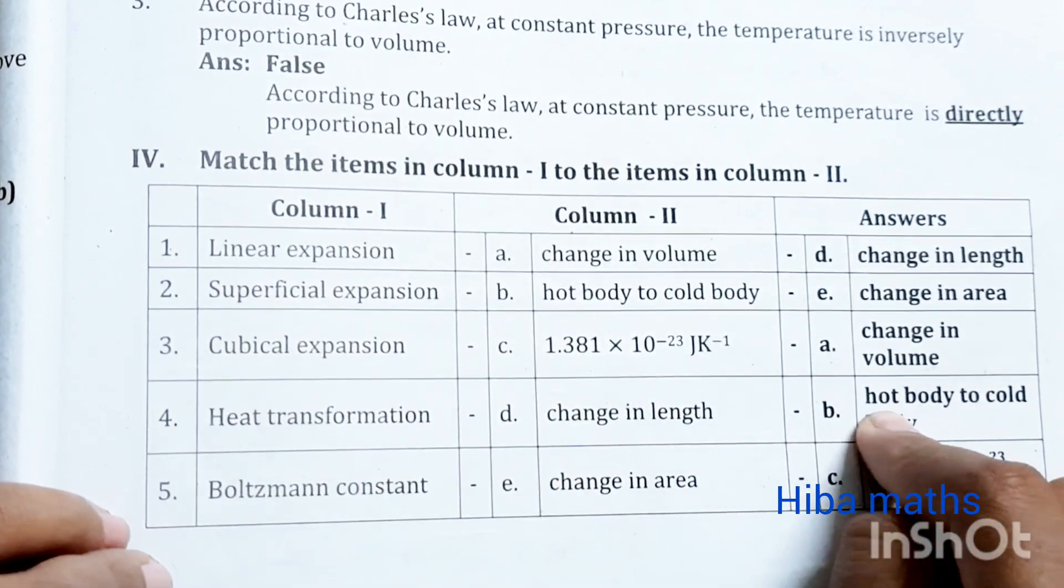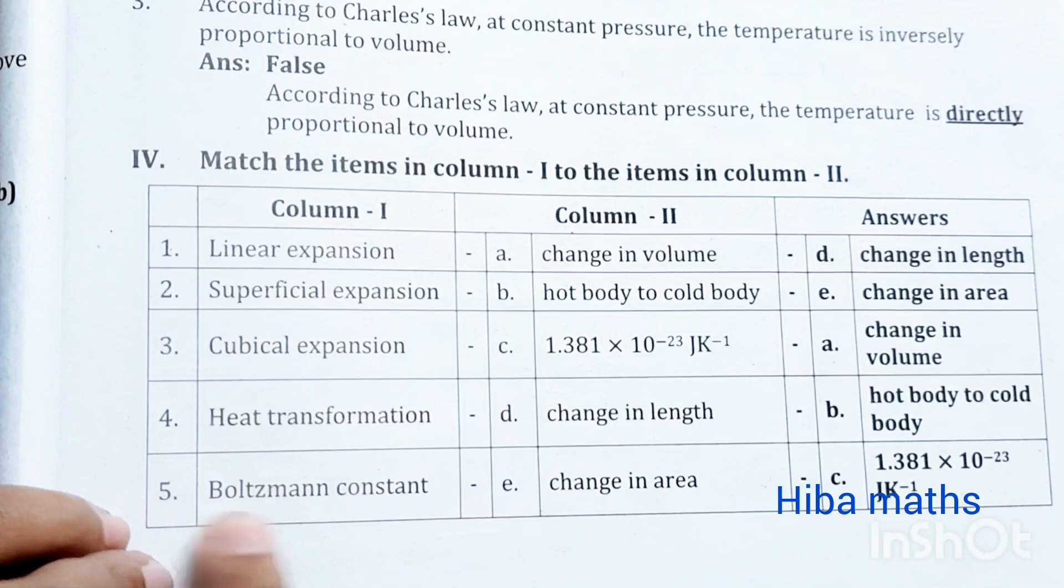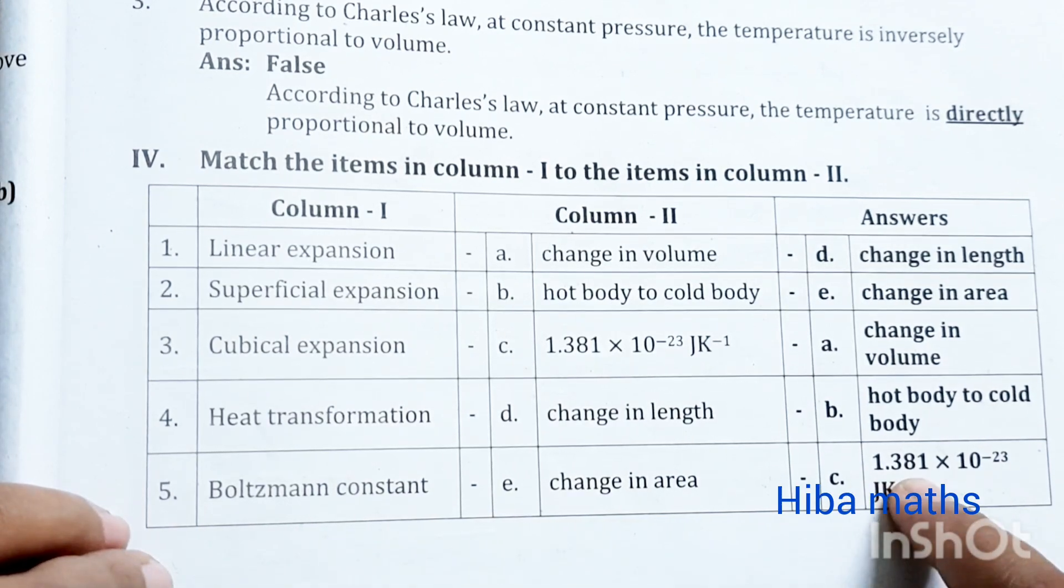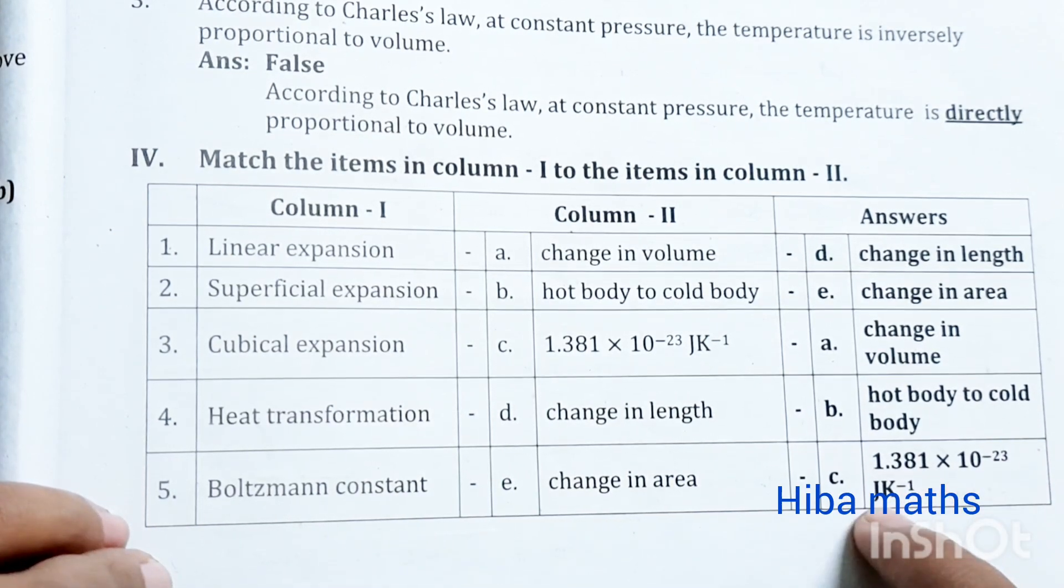Heat transformation - hot body to cold body. Boltzmann constant - 1.381 into 10 power minus 23 joule per Kelvin.